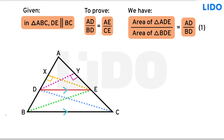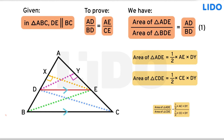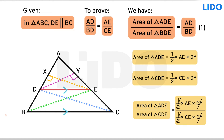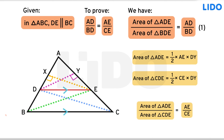Next, if we consider AE as the base, the area of triangle ADE is half times AE times DY, and the area of triangle CDE is half times CE times DY. The ratio of areas of these two triangles is equal to AE over CE. Let this be equation 2.